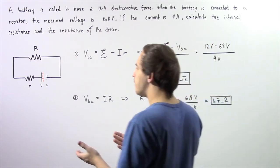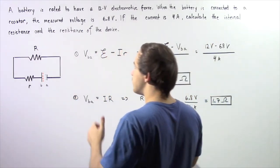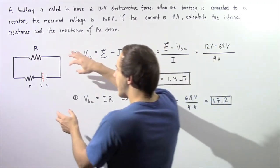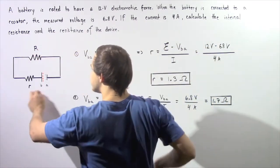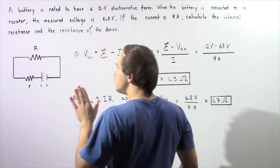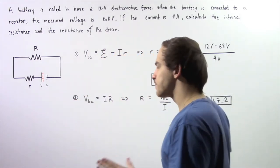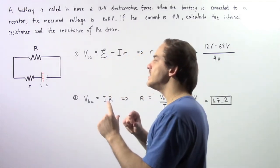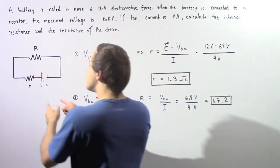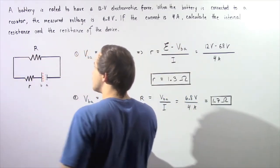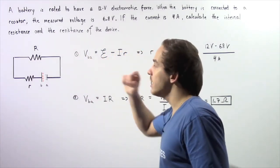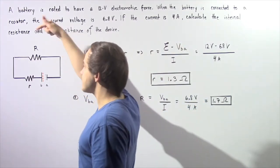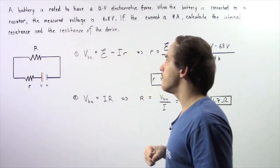Let's begin by looking at the setup of our electric circuit. We have a battery connected to our circuit and two resistors. Lowercase r gives us the internal resistance of our battery, and the resistor given by uppercase R is the resistance of our device that is connected to our battery.